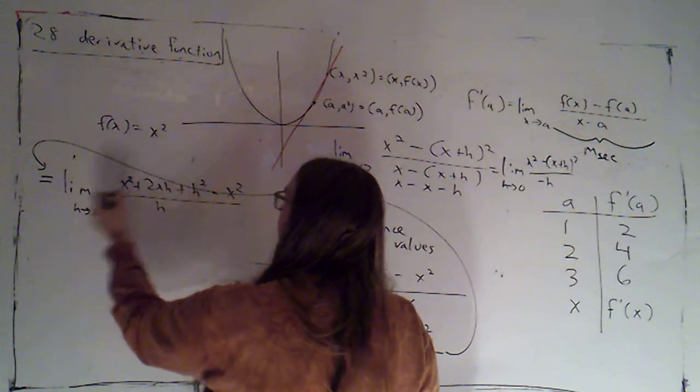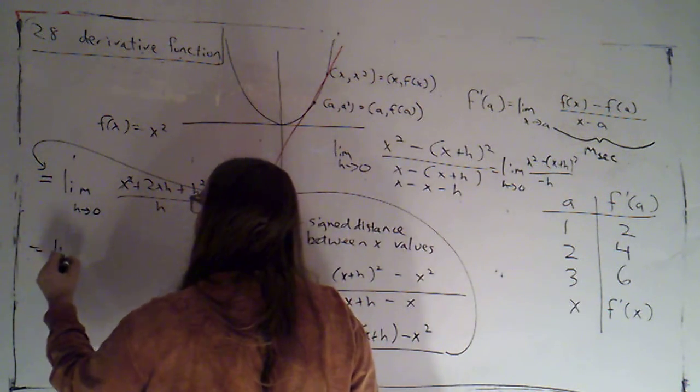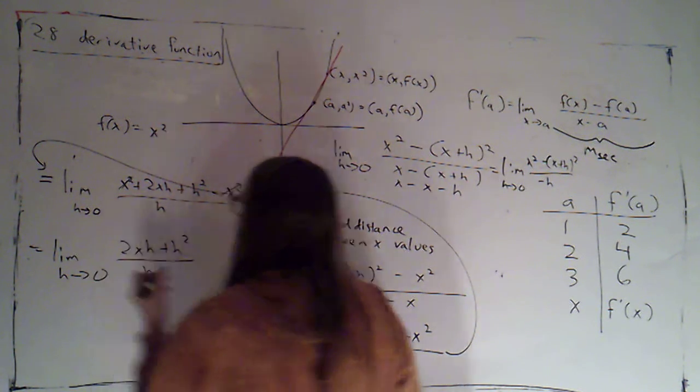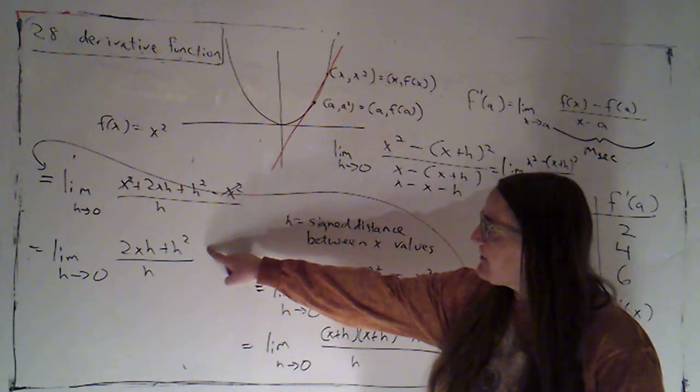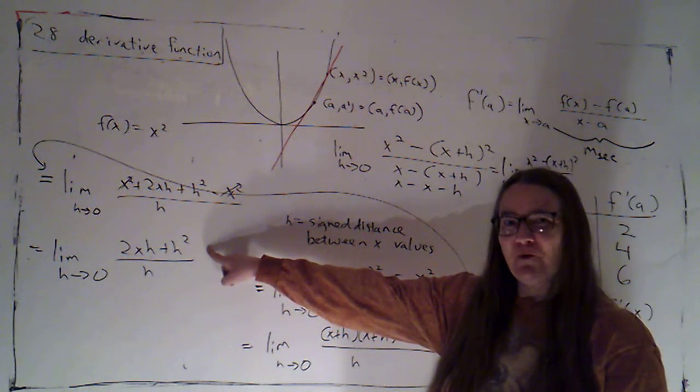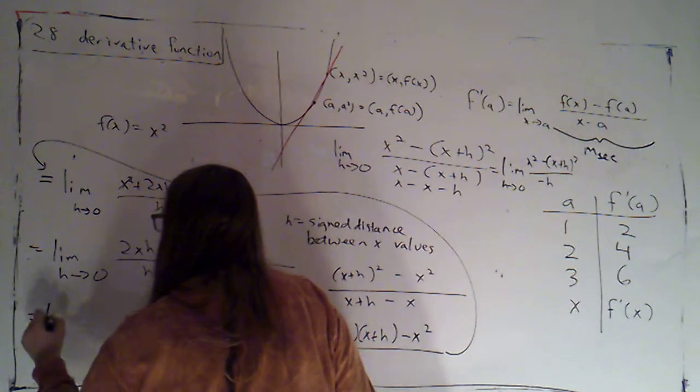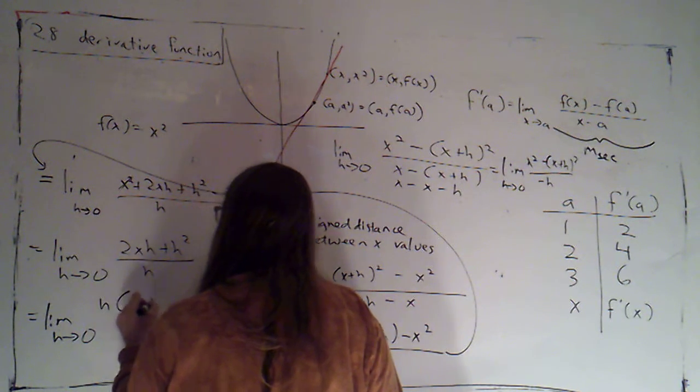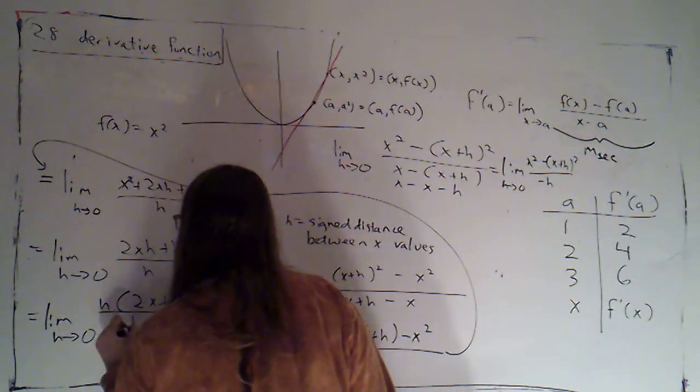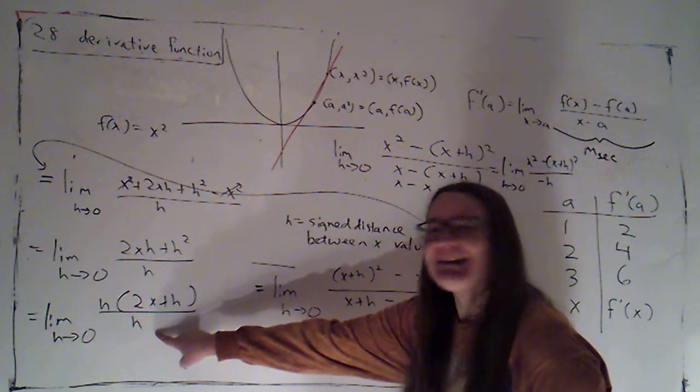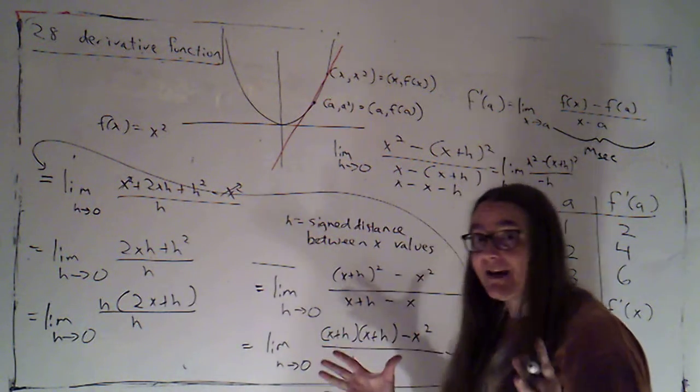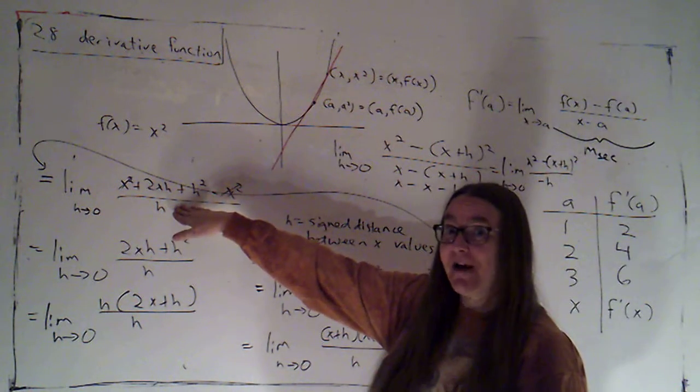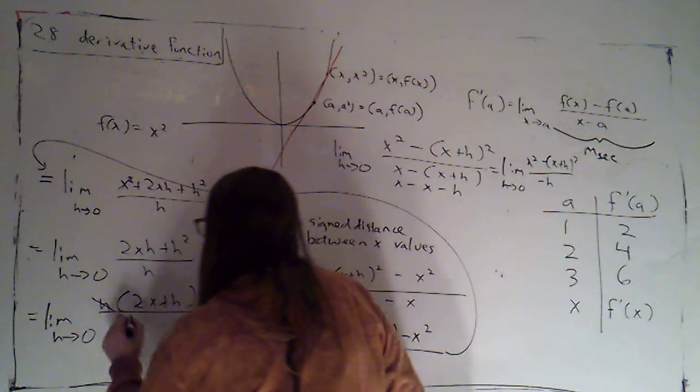Now the x squared and the minus x squared will cancel. So we've got the limit as h goes to zero of 2xh plus h squared all over h. What's very nice about that is now there's an h in both terms on top. So this is the limit as h goes to zero of h times 2x plus h over h. Now I can cancel that h. And that's always going to be my goal because I'm always going to have this h, which is the run in the denominator.